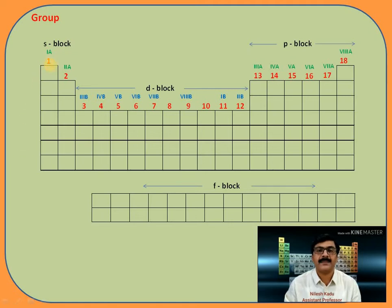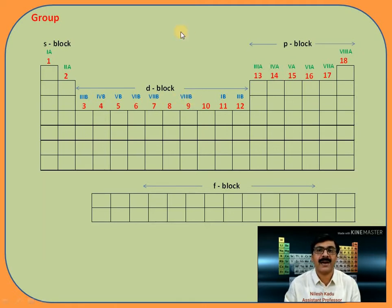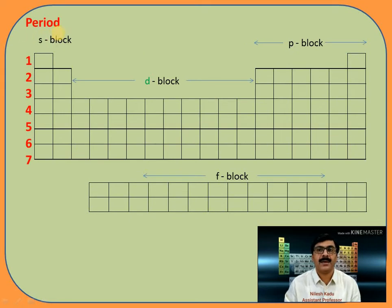So the group distribution in the periodic table is done in two ways: the newest method uses groups numbered one to eighteen, meaning eighteen groups are present in the periodic table. In the oldest method, two types of subgroups are used. Now, what is a period? In the periodic table there are seven rows, and each horizontal row is called a period, so there are seven periods in the periodic table, numbered one through seven.